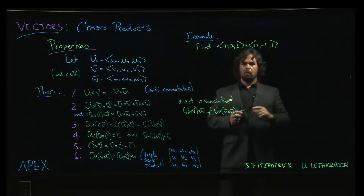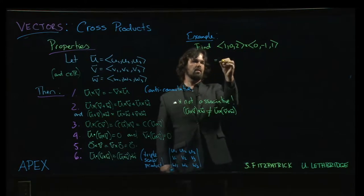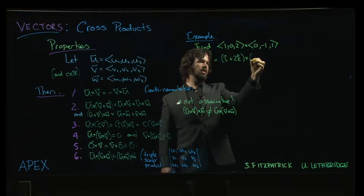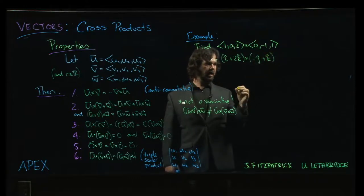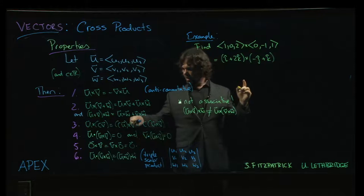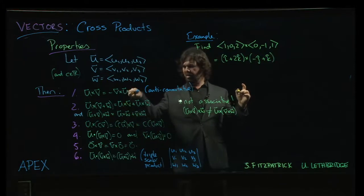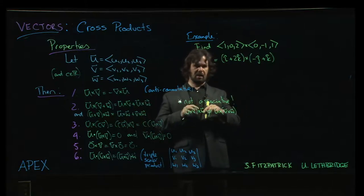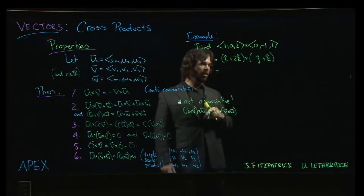Now, what we could do with this is we could write this as i plus 2k crossed with minus j plus k. And because we do have distributive properties, and we do have this anti-commutativity, and also because we can pull out scalars, you can actually foil this out. So this is yet another way of computing the cross product.